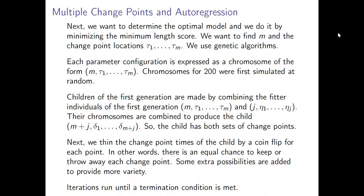We let the process run for the first iteration to produce the first set of children. This is done by combining fitter chromosomes — those with better MDL scores — which gives a child with M plus J change points and the same positions as the parents. Next, we thin the change points for each child by flipping a coin and either keeping or throwing away each change point. This, with some extra added variability, gives us the mutation rule for children.